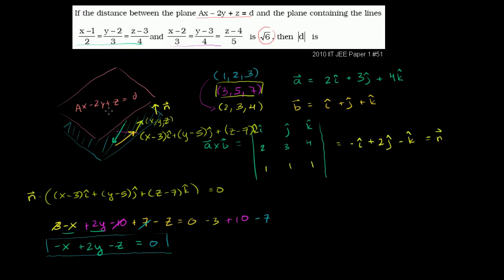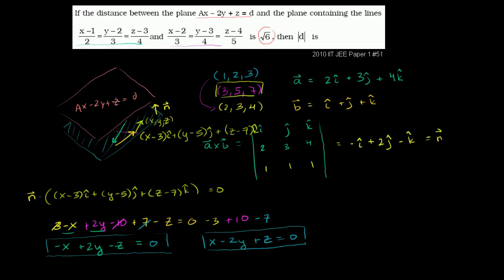Remember, these two planes are parallel, so the ratio of coefficients on x, y, and z must be the same. Multiplying the blue plane's equation by negative 1 gives x minus 2y plus z equals 0. Comparing with the orange plane ax minus 2y plus z equals d, the y and z coefficients already match 1-to-1, so a must equal 1. The orange plane is x minus 2y plus z equals d.